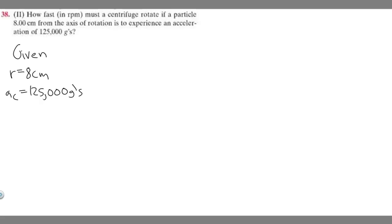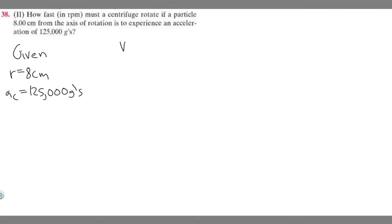So what we're trying to do here is solve for velocity. Notice how they're asking in RPM, and that's going to be a velocity. Hopefully by now you know this formula: A sub C, or your centripetal acceleration, is equal to V squared over R. Notice what we can do is solve for V, because that's what we need. If we multiply both sides by R and then square root both sides, you get that V is equal to the square root of A sub C times R.